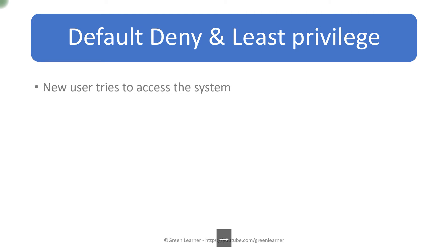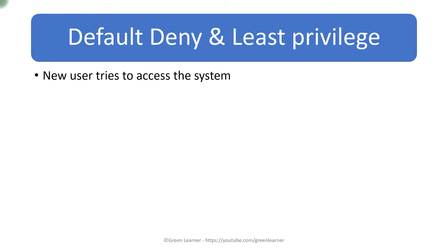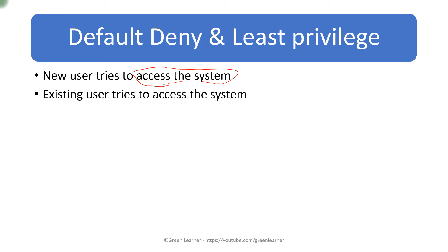For default deny and least privilege, there are two use cases: new users accessing the system and existing users. By default, any new user must be denied access. For registered users, at every layer there should be rules defined about what they are allowed to do, and by default they should not be allowed to do anything — there should be explicit permission for everything. This prevents broken access control, which we saw in the OWASP top 10.